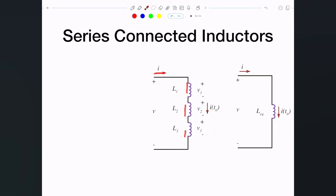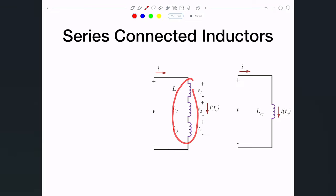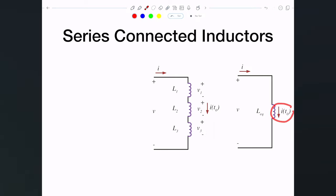If they are in series, the current I flowing through all three of them is equivalent, and the initial current — if they are storing any energy as a magnetic field — is the same through all of them. Our interest is to figure out whether we can replace these three with an equivalent inductor, and what the relationship is between L1, L2, L3, and L_equivalent.